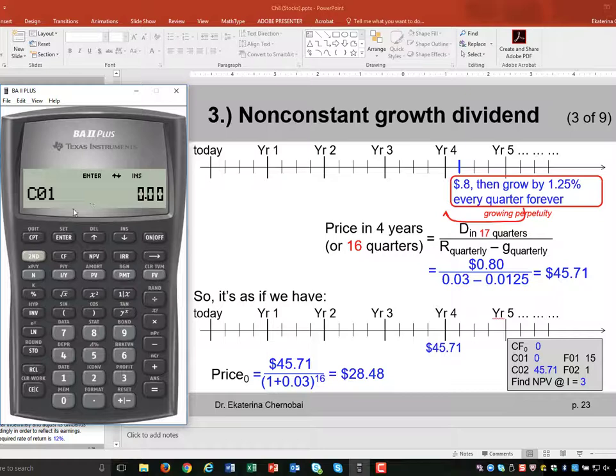Cash flow one means the very first one in the future. So our future is counted in quarters, in quarterly increments. What is the end of the first quarter cash flow equal to? It's zero dollars. And in fact, we have zero dollars at the end of the second quarter and the third quarter and all the way until the end of the 16th quarter.